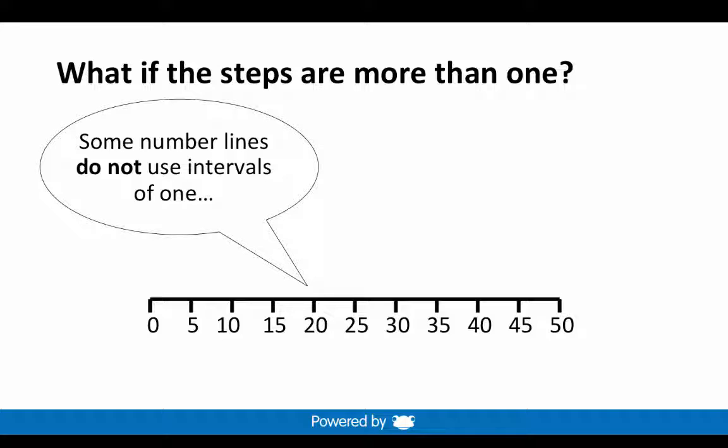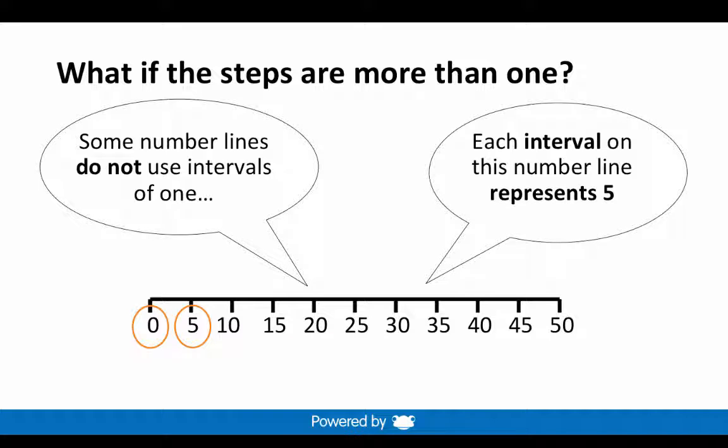To find the interval, we need to find the difference between two numbers that are next to each other on the line. Let's make it easy on ourselves and look at the smallest numbers, 0 and 5. The difference between 0 and 5 is 5, so we know each interval or jump on this number line represents 5.